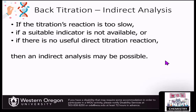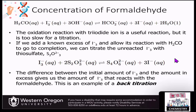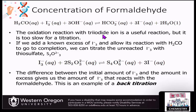So what does that look like? Here's an example of a reaction where we can use an indirect analysis. In this case, we want to detect the concentration of formaldehyde by using its reaction with triiodide. While this is a useful reaction because it's reacting directly with the analyte we want to look at, the reaction is actually too slow for a titration. You would end up adding excess, it would overshoot, and you wouldn't be able to get the equivalence point.